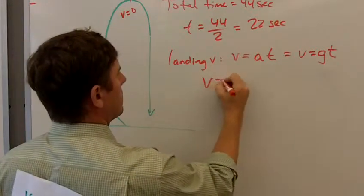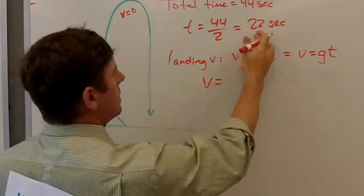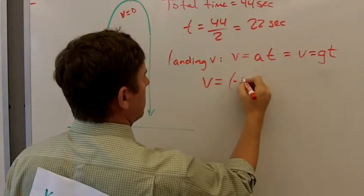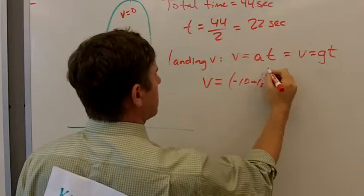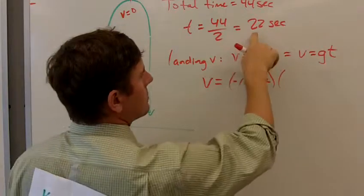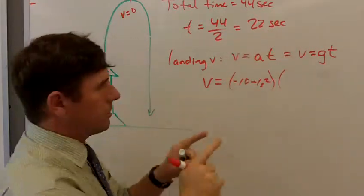So let's plug the numbers in here. V equals G. G is negative 10 meters per second squared in this case. And then T, we're going to use 22. Not 44. 22.